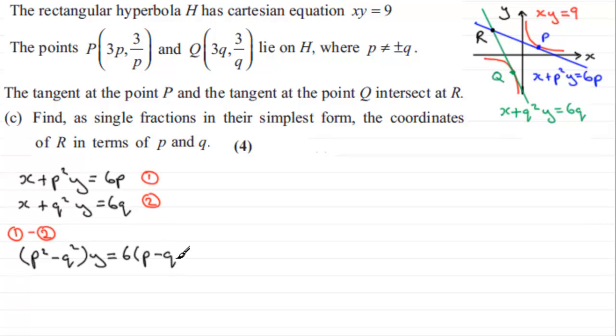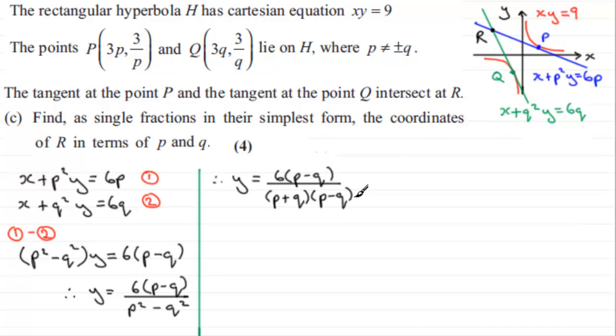I can rearrange this for y, and we get that therefore y equals 6 times p minus q all divided by p squared minus q squared. Now p squared minus q squared is the difference of two squares, so that factorizes further. We've got y equals on the top 6 times p minus q, but the bottom is the difference of two squares, so that factorizes to p plus q multiplied by p minus q. You can see that the two factors p minus q cancel one another out, so that leaves us with the y coordinate at R as 6 over p plus q.